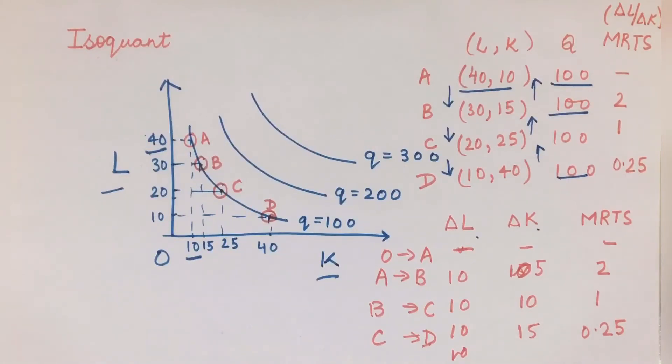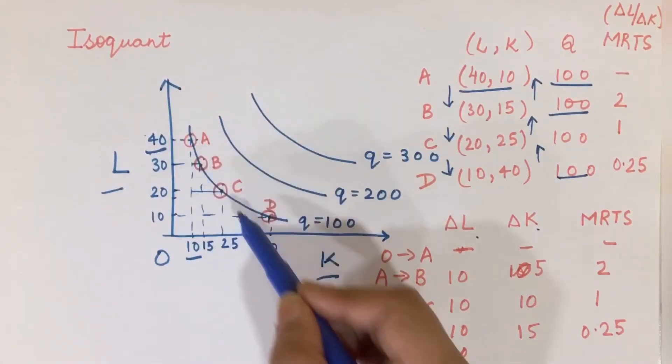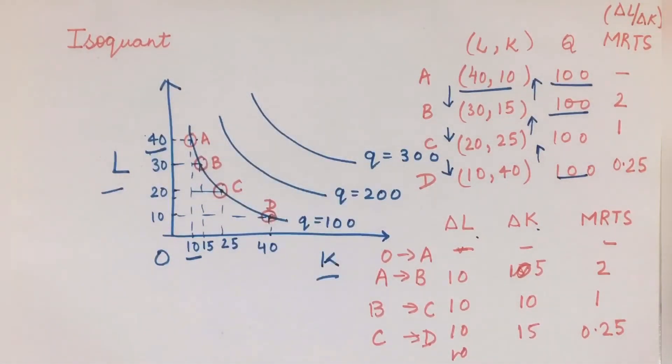It doesn't really matter which combination is there in an economy - whether I am at A, B, C, or D. What really matters for an isoquant is that the number of output produced is 100. If I join these points A, B, C, D, what I get is an isoquant.